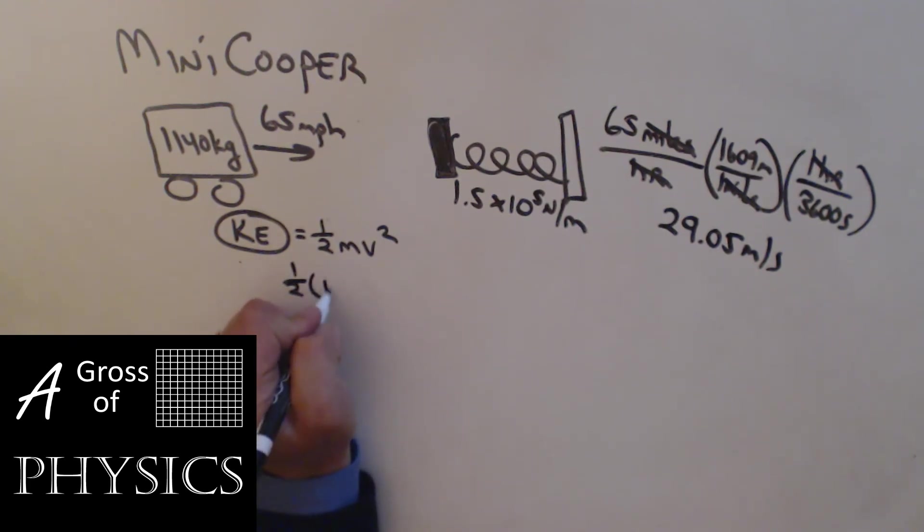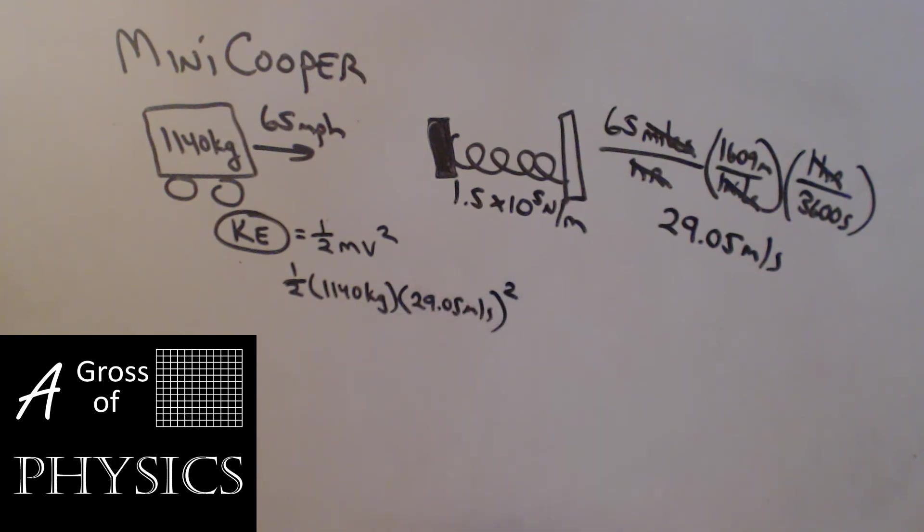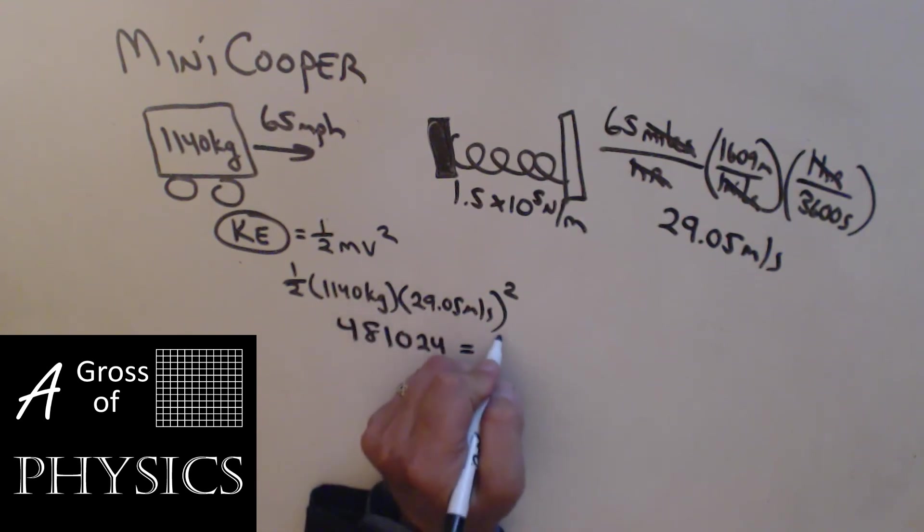We'll use that in our kinetic energy equation. One half, 1140. We don't have to convert that. 29.05 meters per second squared. 0.5 times 1140 times 29.05 squared gets me 481,024. And that's going to equal the energy gained by the spring.